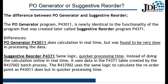The question is: do we want to work with the PO Generator or the Suggested Reorder? Two options, identical logic. The difference is that the PO Generator, P43011, does the calculation in real time using the interactive version we just looked at. But if you're working with thousands of parts, it's going to be very slow. So they came back with an upgraded version called the Suggested Reorder, the P4371. It works in conjunction with a batch version, the R437002, which uses the same logic to calculate the reorder point — just with much quicker processing time.